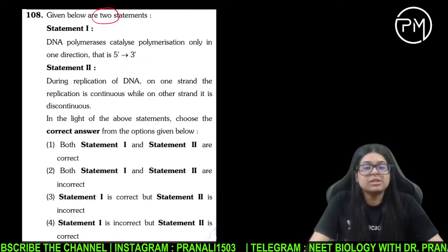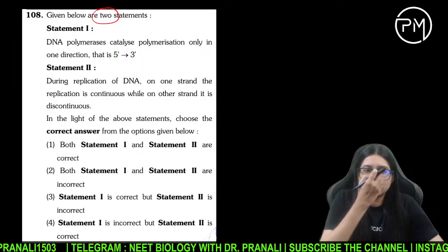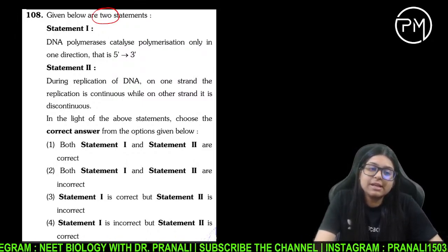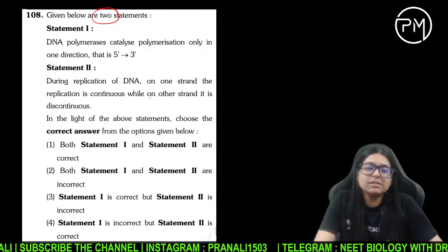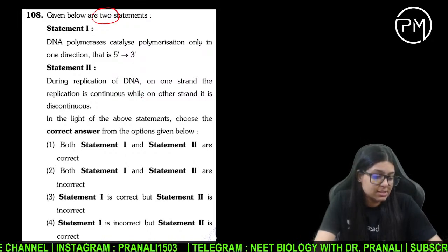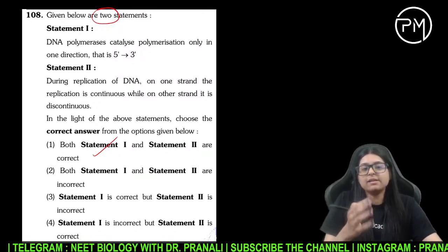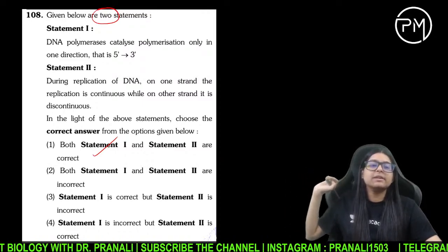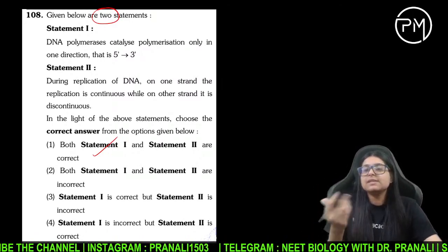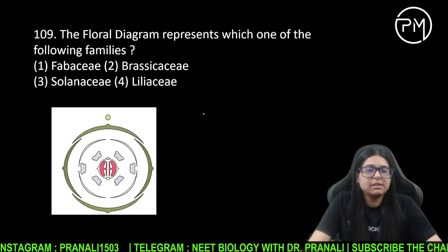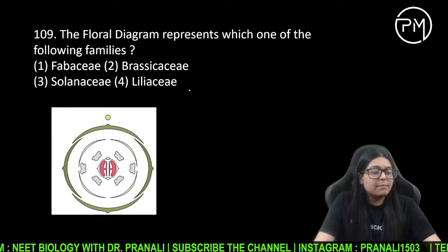Given below are two statements. DNA polymerase catalyzes polymerization in one direction — that is 5' to 3'. Doosra statement kya bolta hai ki replication ke time DNA ka one strand ka replication is continuous while on the other strand it is discontinuous. Dono bilkul sahi likhi hain — DNA polymerase nucleotides ko add karta hai 5' to 3' direction mein, aur ek taraf continuous, ek taraf discontinuous se Okazaki fragments banenge.